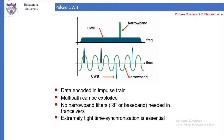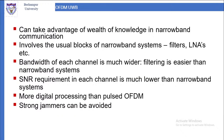In pulsed UWB transceivers, no narrow band filters or base band filters are required because it is ultra wide band, so filtering is not necessary. However, extremely tight time synchronization is essential — the pulse must be received at exactly the same time it was sent. For OFDM UWB, it stands for Orthogonal Frequency Division Multiplexing. It can take advantage of knowledge developed in narrowband communication, involving the usual blocks of narrowband systems like filters and low noise amplifiers (LNA). Bandwidth of each channel is much wider because of UWB, so filtering is easier than in narrowband systems.